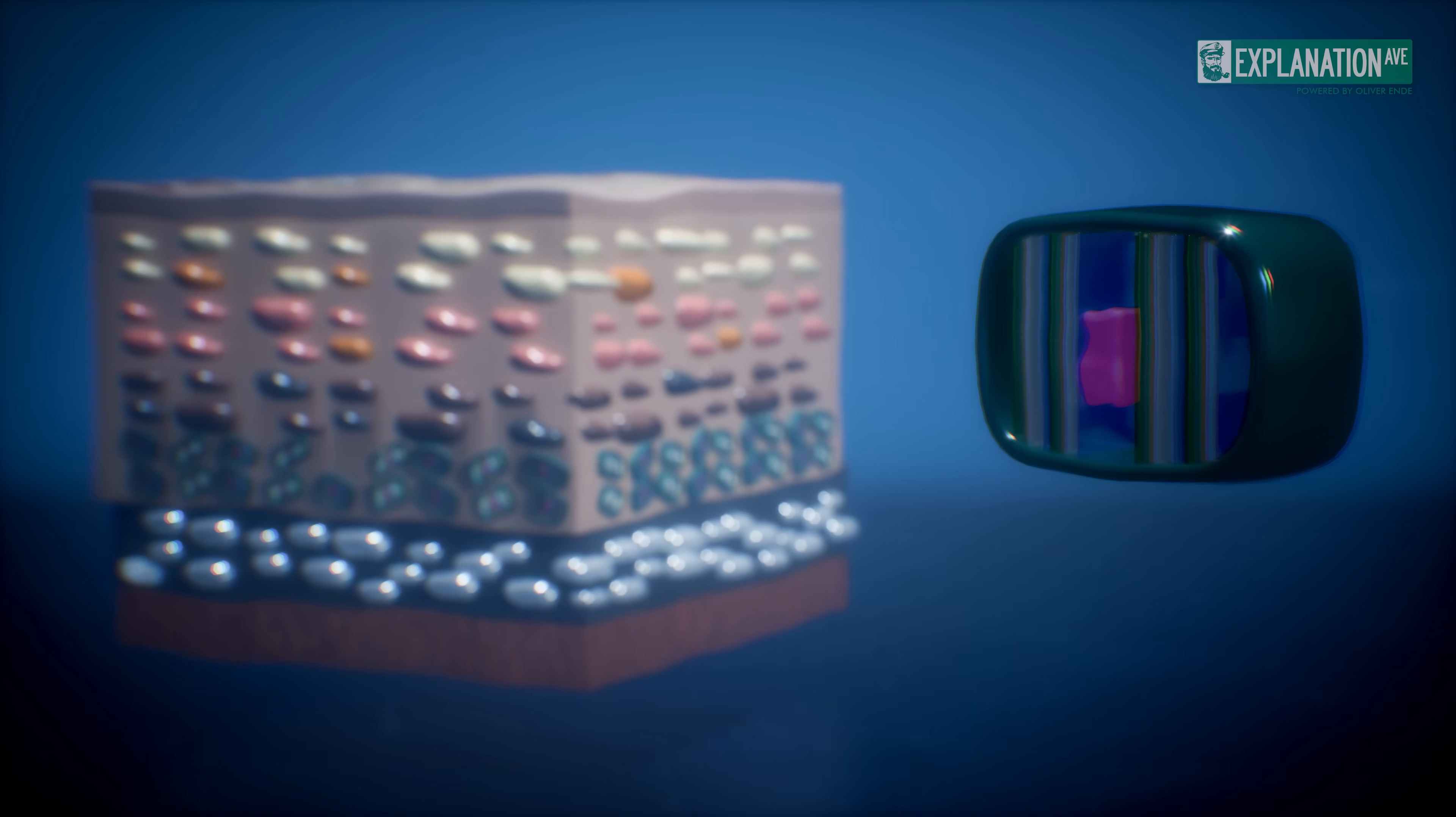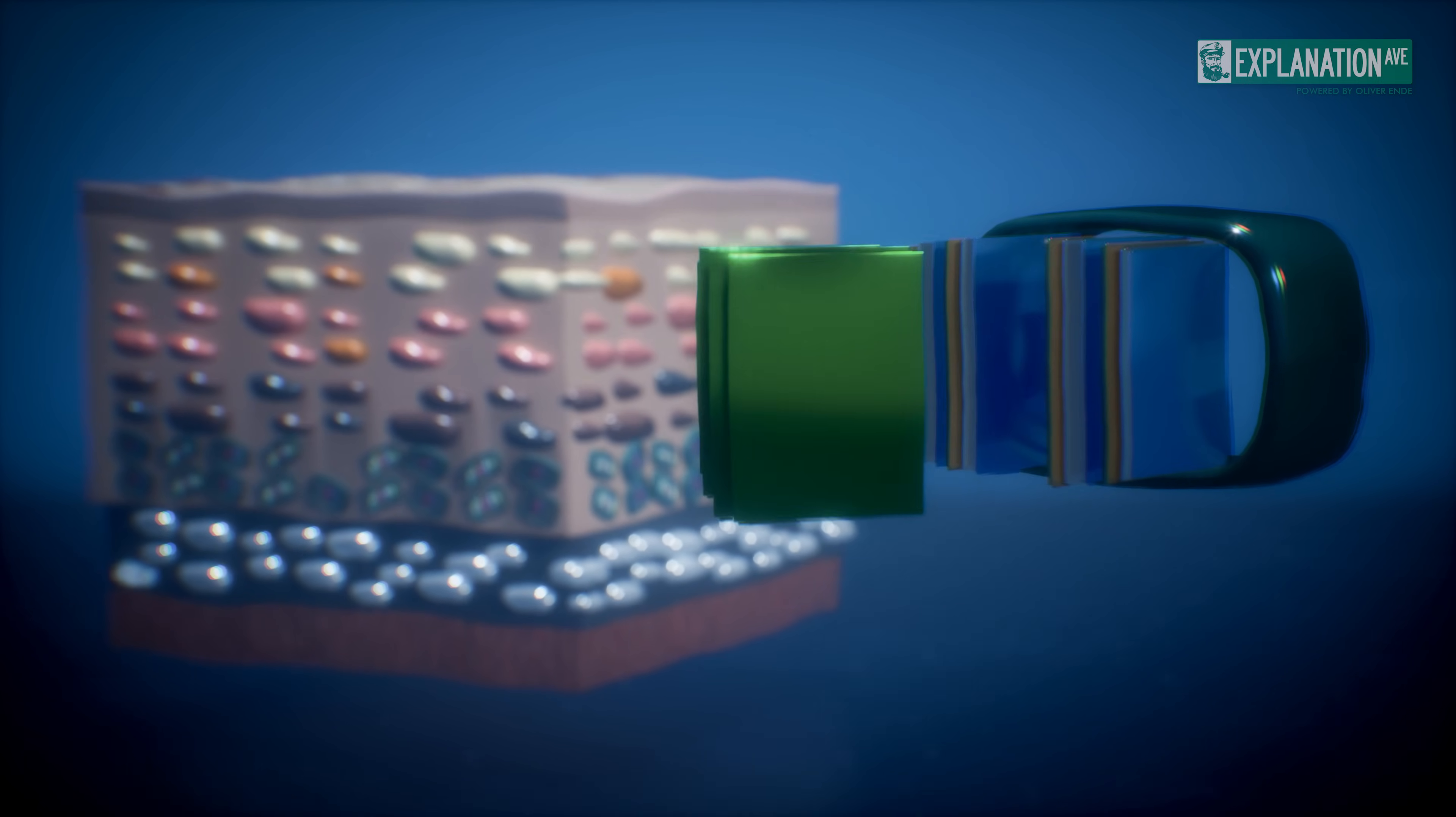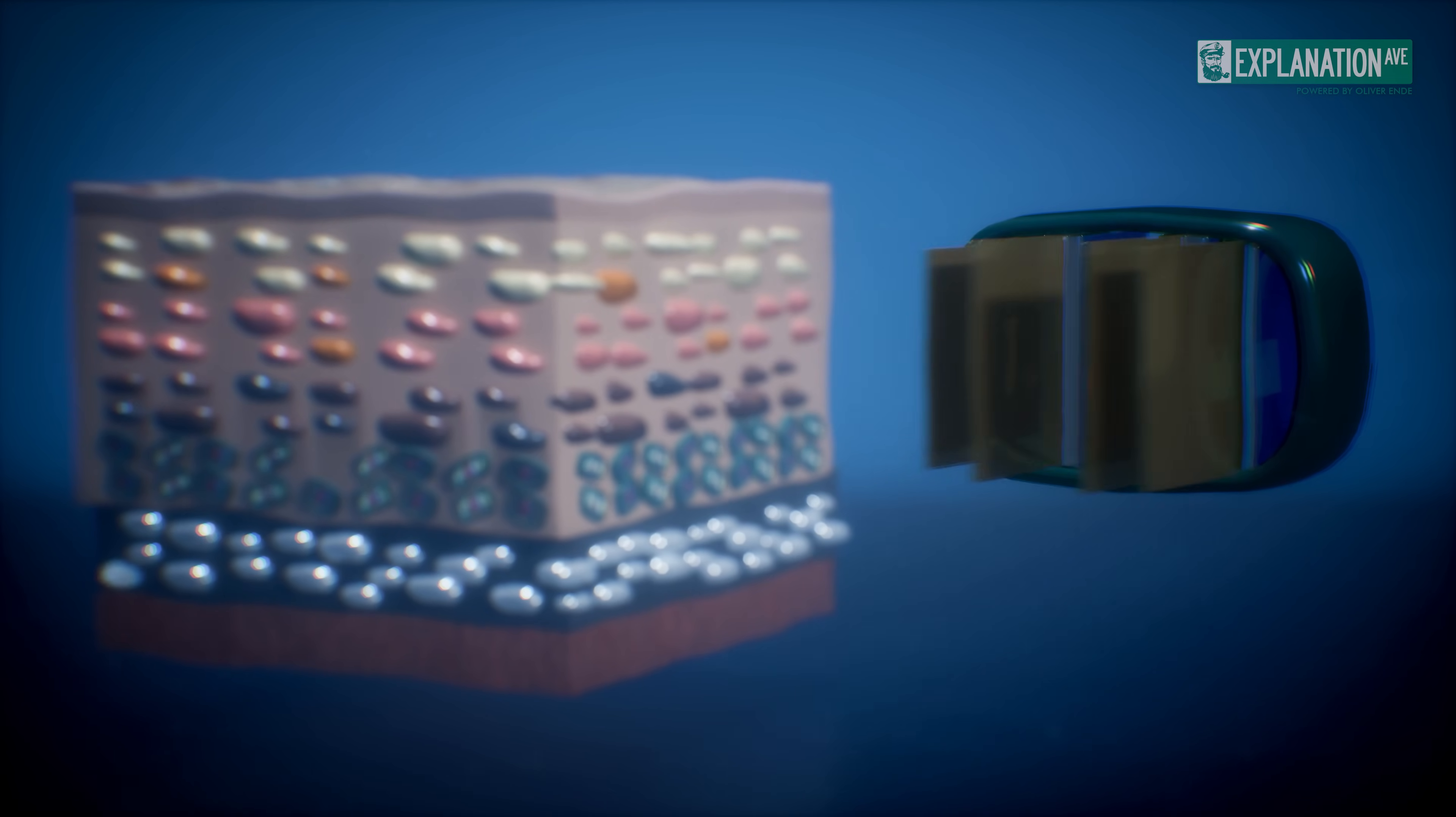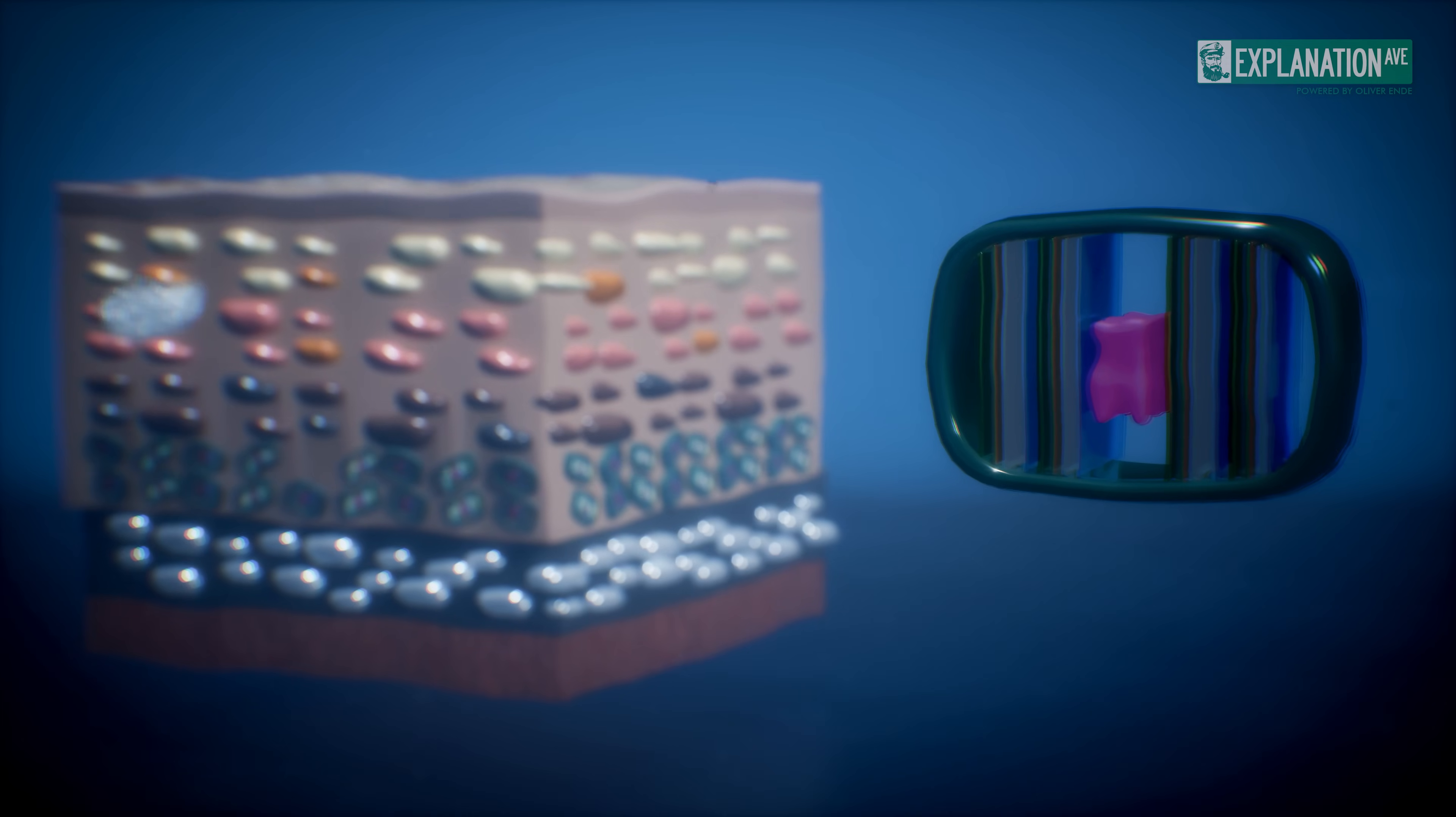Iridophores are another type of skin cell that produce green, blue, silver, and gold colors through stacks of reflective plates, depending on the viewing angle. In contrast to chromatophores, they react more slowly and may not be directly controlled by neuronal input.